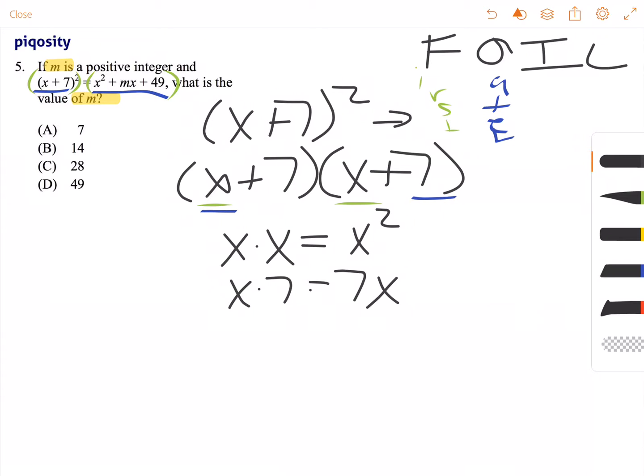Then we have our inners, which refer to this 7 here and now this x here. So x times 7, also 7x.